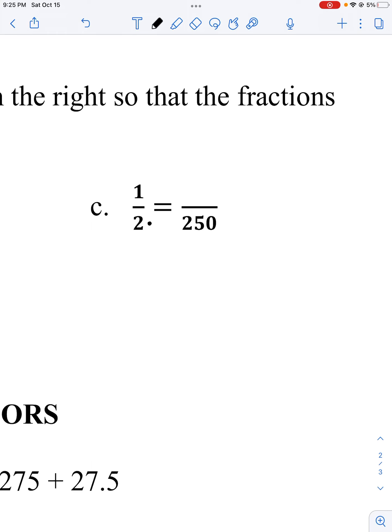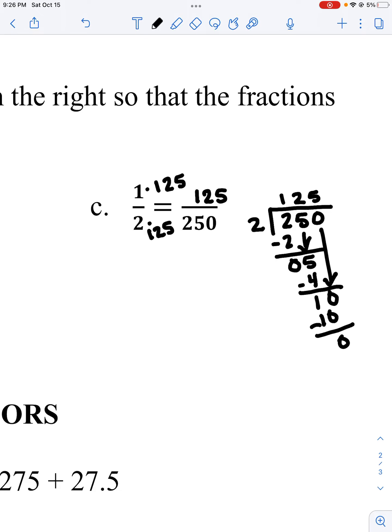For 1 half, 2 times a number is 250. Whatever I multiply 2 by, I also have to multiply 1 by. I can use division to help me. 250 divided by 2. 2 goes into 2 one time, drop my 5. 2 goes into 5 two times with 1 left over. Drop my 0, 2 goes into 10, 5 times with no remainder, which means I know it's 125. 1 times 125 is just 125.